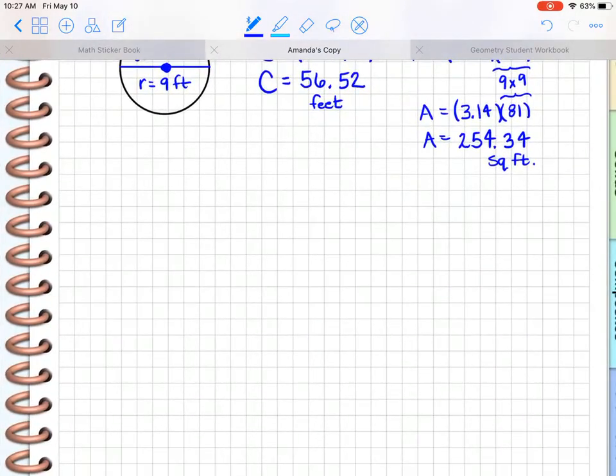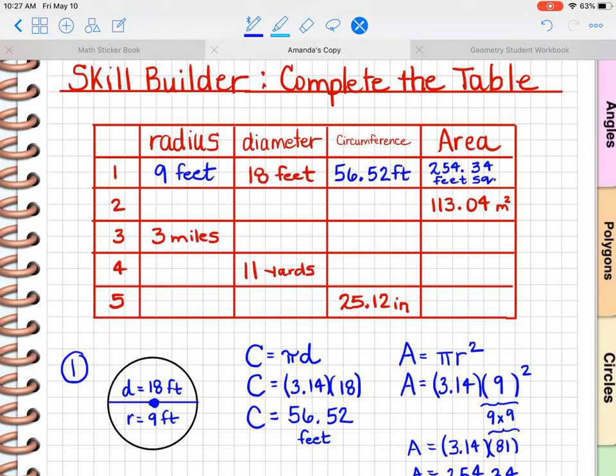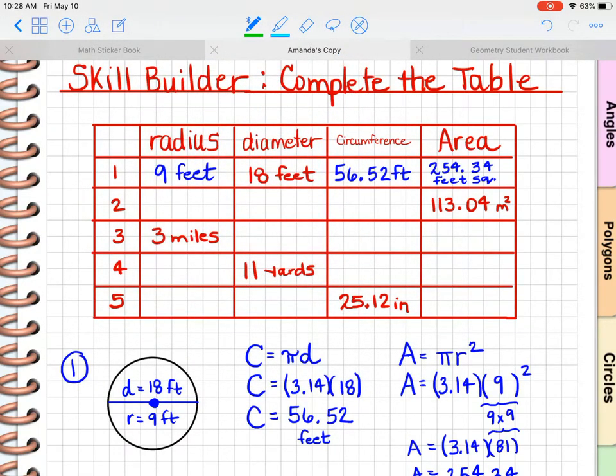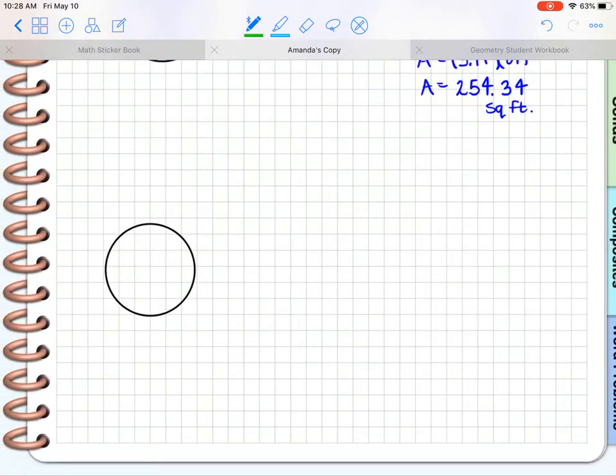Let me scroll up and make myself a space for circle 2. And I think probably I'm only going to get 2 on this page. So I'll try not to squeeze it all together. And let's go back and get our clue on this one. I think I'll use green on this line. And this time they tell me that the area is 113.04 square meters.